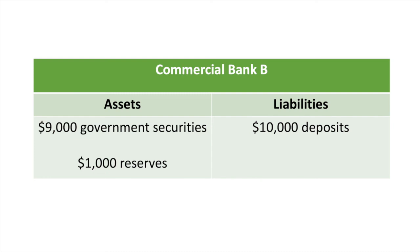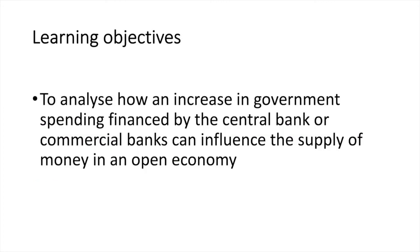In both banks A and B loans are issued. However, the situation in bank B allows the bank to continue to issue loans and as such will result in a greater increase in the money supply. By now you should have a better understanding of how an increase in government spending financed by either the central bank or commercial banks can influence the supply of money in an economy. If you have any questions or comments, post them below and we can try to answer them together.